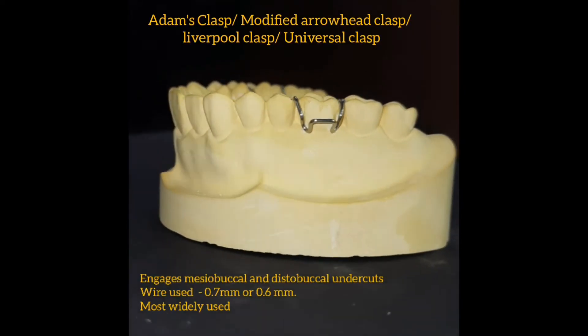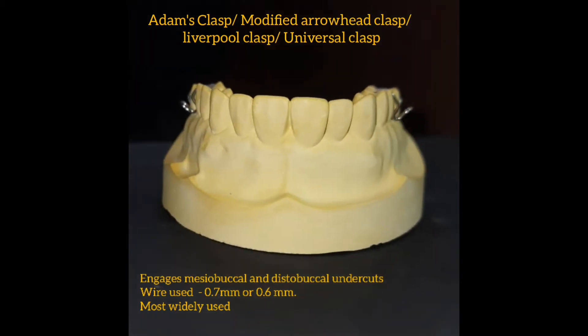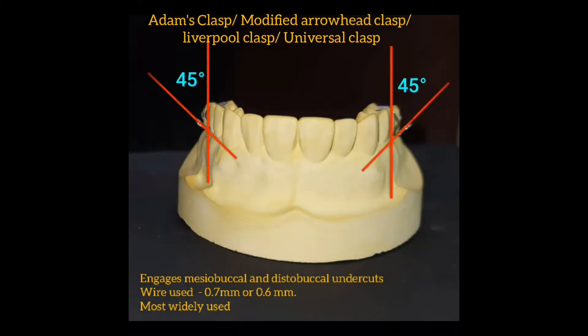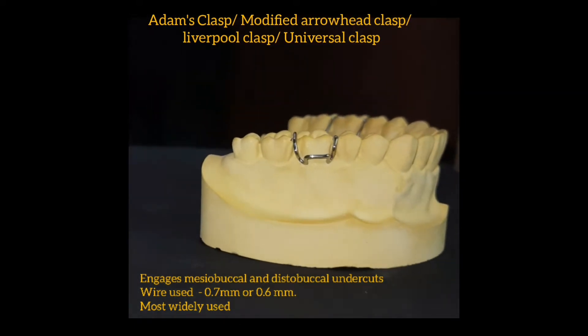So here's the design. Adam's clasp engages the mesobuccal and distal buccal undercuts of posterior teeth. The bridge is at a 45 degree angle from the vertical axis of the tooth and it has different parts such as the bridge, the arrowhead and the million dollar bend.